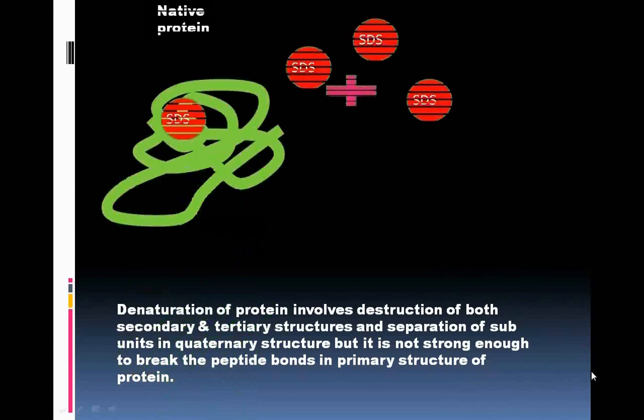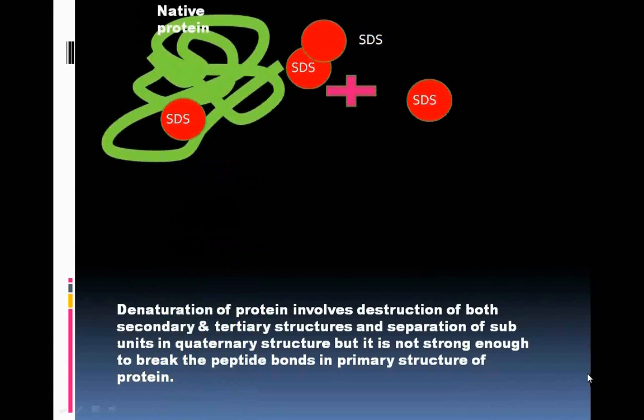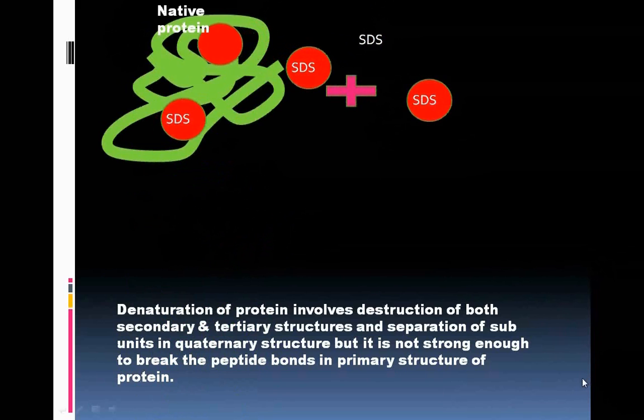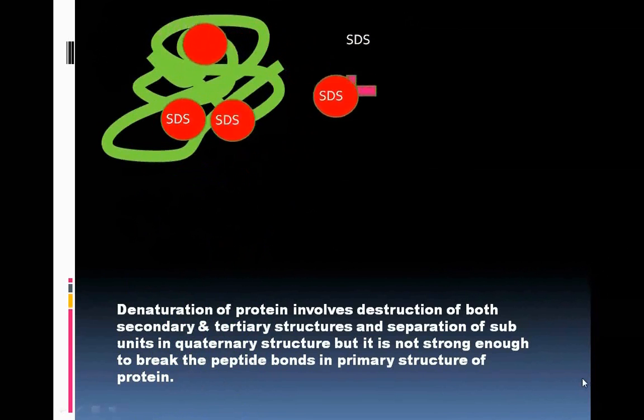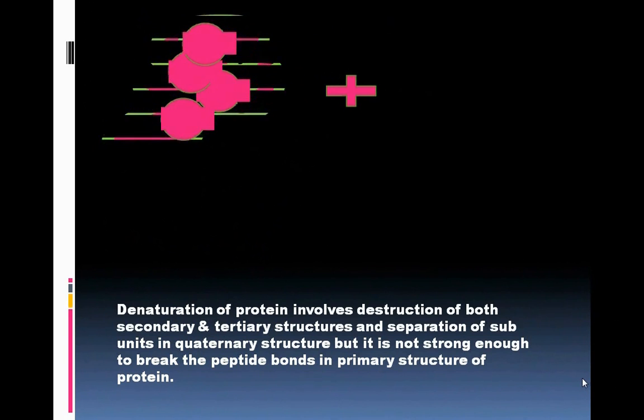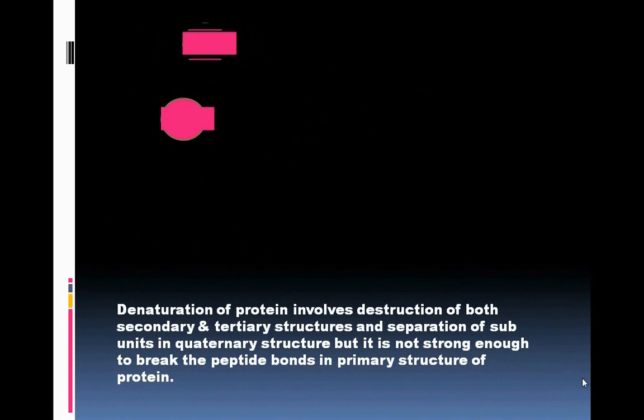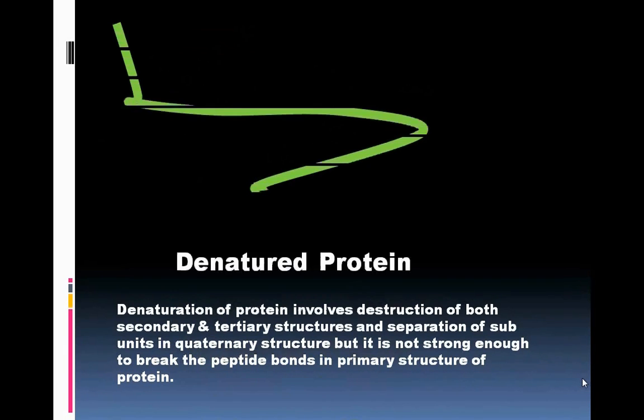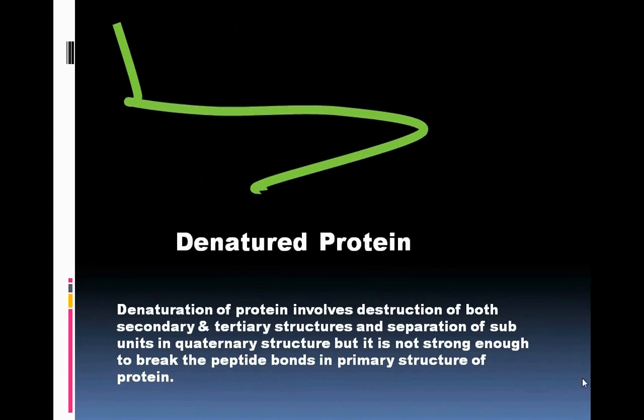Denaturation of protein involves destruction of both secondary and tertiary structures and separation of subunits in quaternary structure but is not strong enough to break the peptide bonds in primary structure of protein. As a summary, denaturation disturbs the normal alpha helix and beta sheet in a protein and untwists it into an arbitrary shape.